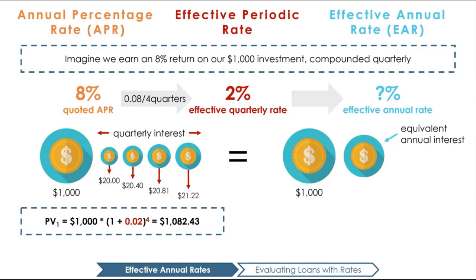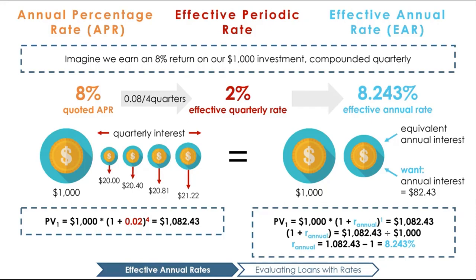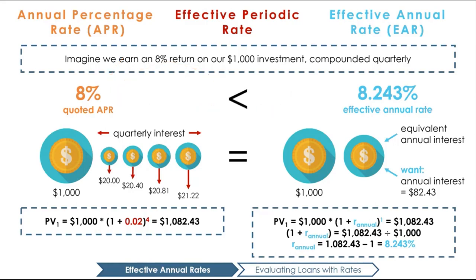What effective annual rate would have given us this same return? We want our future value in a year to be $1,082.43. Therefore, we can set $1,082.43 equal to 1,000 times 1 plus r to the power of 1 and isolate for r. This tells us what interest rate will cause our $1,000 today, when compounded only once for the year, to have the same future value as if we compounded it quarterly. Dividing by the initial value of 1,000 and subtracting 1 allows us to isolate for r, which is 8.243%. Notice that the APR simply takes our 2% effective quarterly rate and multiplies it by 4, the number of compounding periods in a year. This 8% APR is smaller than the EAR of 8.243% because the APR is not capturing the effect of compounding.